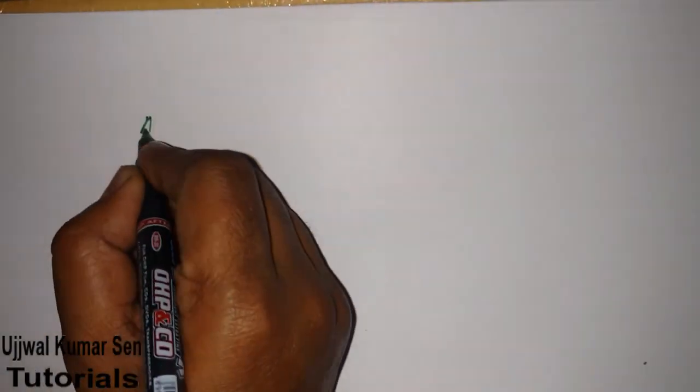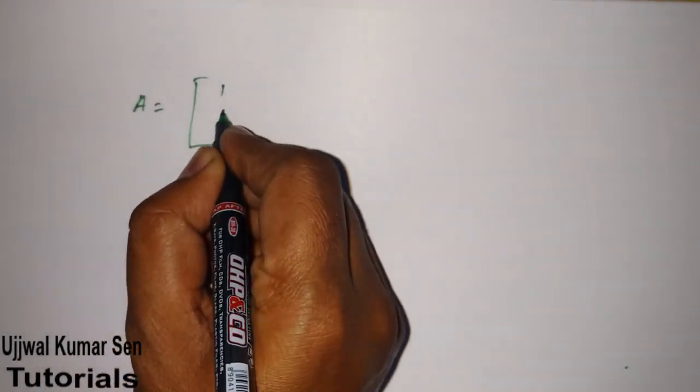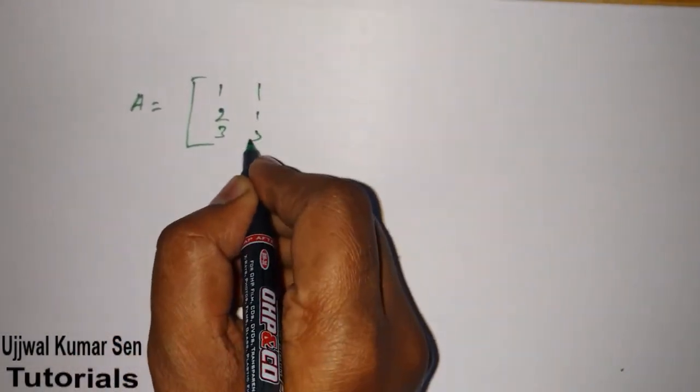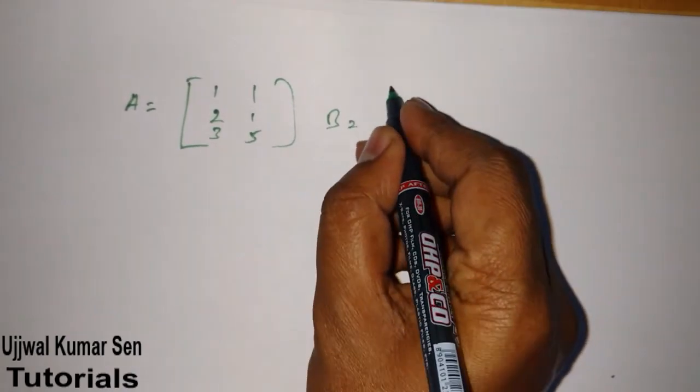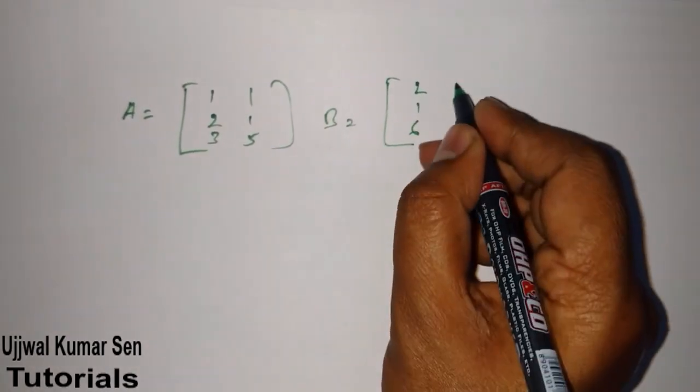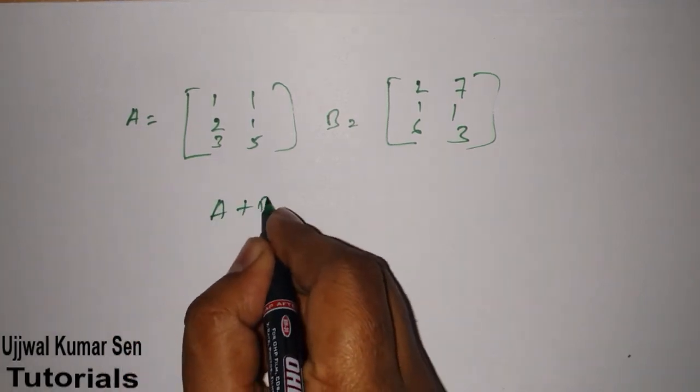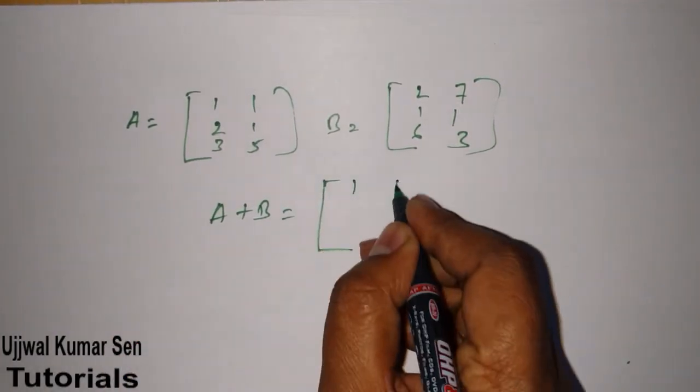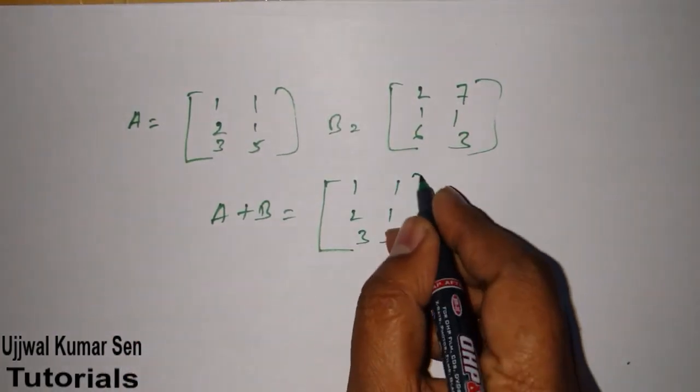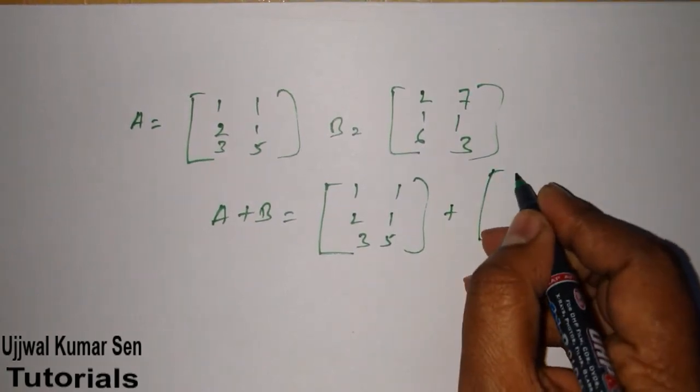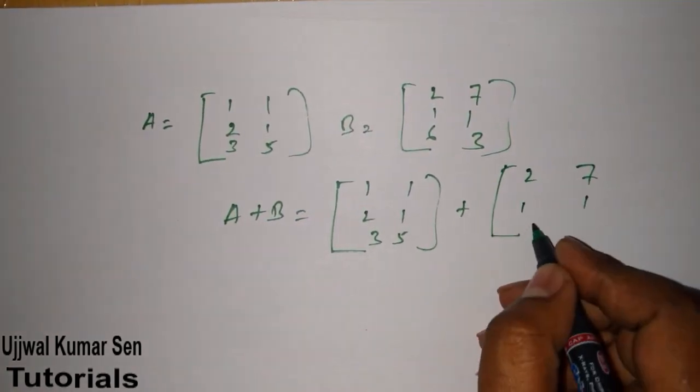Suppose that we have given matrix A is equal to 1, 2, 3, 1, 1, 5. And B is equal to we have given 2, 1, 6, 7, 1, 3. Then even we can do addition. Just like A plus B is equal to 1, 1, 2, 1, 3, 5 plus 2, 7, 1, 1, 6, 3.